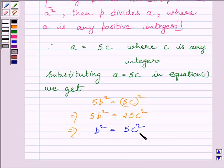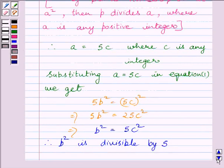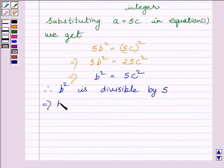Now, clearly we can see 5 and C square both are factors of B square. So, we can write B square is divisible by 5. This implies B is divisible by 5.